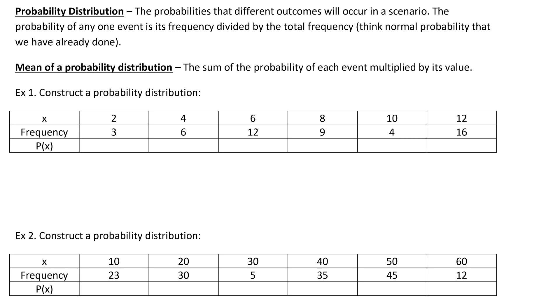In order to do those, it's just the normal probability, the basic probability that we already did earlier. That's how we're calculating that. Now the mean of a probability distribution, that's going to be kind of the newer part. The mean of a probability distribution is the sum of the probability of each event multiplied by its value. For these first two examples, we're just going to be constructing a probability distribution just so you can see what this table is actually going to look like, and then we'll talk about the mean afterwards.